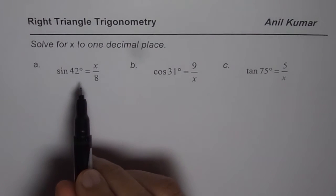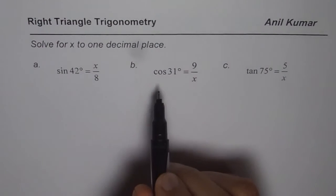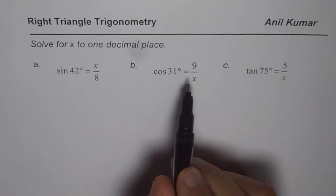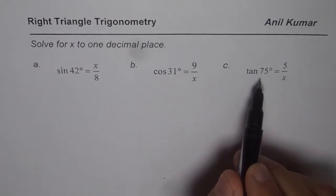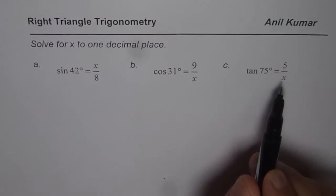Sin of 42 degrees equals to x over 8, cos of 31 degrees equals to 9 over x, and tan of 75 degrees equals to 5 over x.